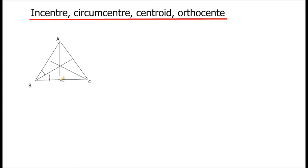This is an angular bisector from A and this is an angular bisector from C. All these three angular bisectors intersect at a common point. That common point we take as in-center I.